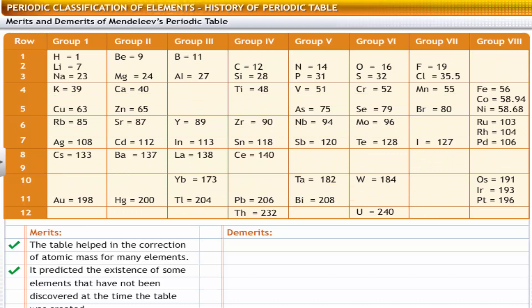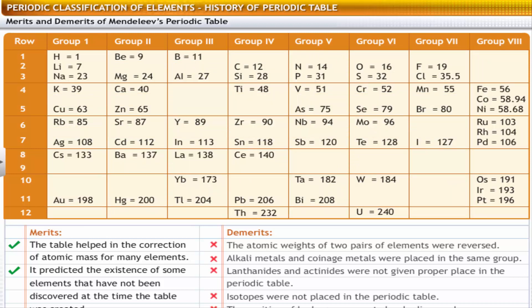However, it did not achieve complete success because of some demerits. The table had some inaccuracies. For example, the table reversed the atomic weights of two pairs of elements. Iodine, with atomic weight 127, came after tellurium, with atomic weight 128.